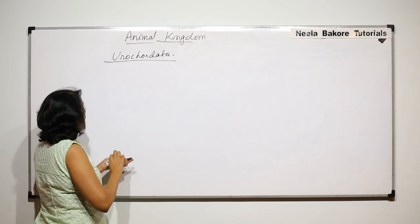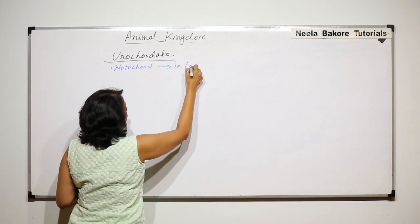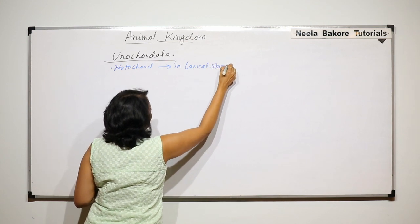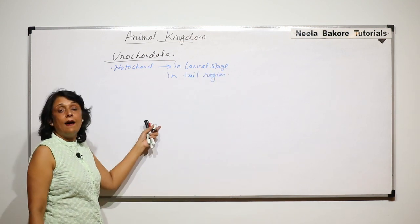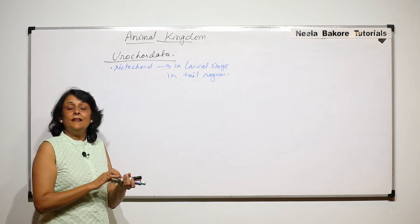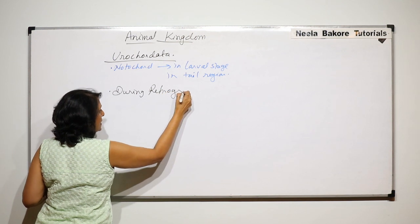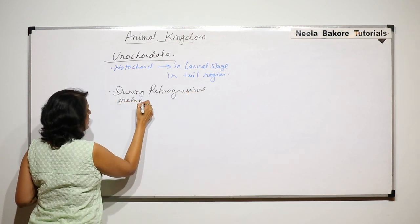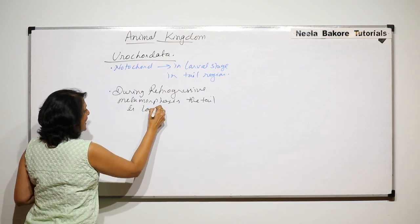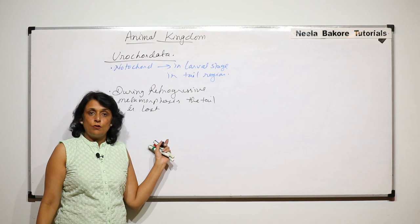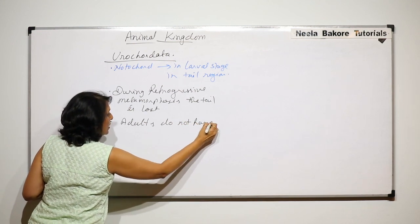In Urochordata, the notochord — which is a chordate character — is present only in the larval stage, and that too only in the tail region. Their larvae have this notochord only in the tail part. Now when the larva undergoes retrogressive metamorphosis, this tail is lost, and as the tail is lost the notochord is also lost. That means the adults do not have this notochord.